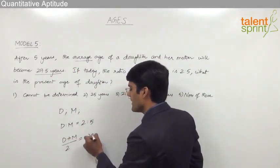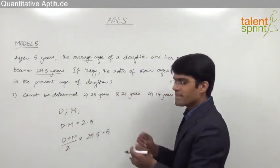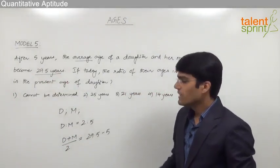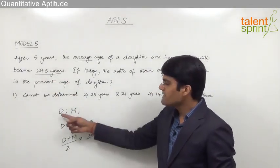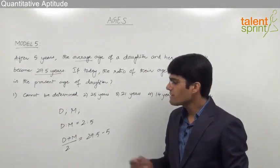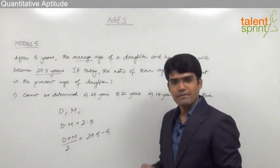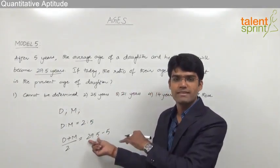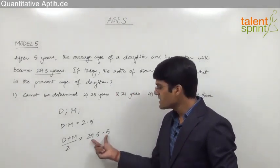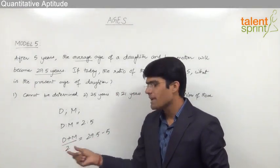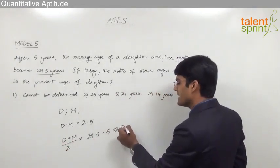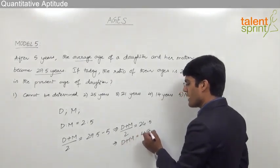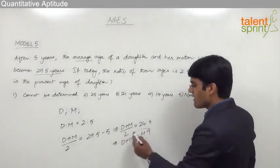This average of 29.5 is 5 years more than the present average, so the present average, that is d plus m by 2, should equal 29.5 minus 5. Since 29.5 is an increased average which has increased by 5 years, to get the present average we subtract 5. Therefore d plus m by 2 equals 24.5, and the total of their ages, d plus m, equals 24.5 into 2, which is 49.